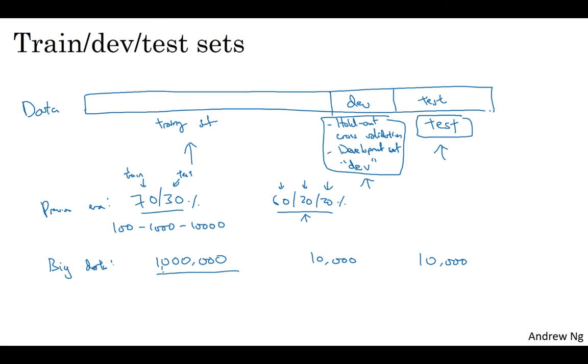So in this example, where you have a million examples, if you need just 10,000 for your dev and 10,000 for your test, your ratio would be more like this 10,000 is 1% of 1 million. So you have 98% train, 1% dev, 1% test. And I've also seen applications where, if you have even more than a million examples, you might end up with 99.5% train, and 0.25% dev, 0.25% test, or maybe a 0.4% dev, 0.1% test. So just to recap, when setting up your machine learning problem, more often set it up into a train, dev, and test sets. And if you have a relatively small data set, these traditional ratios might be okay. But if you have a much larger data set, it's also fine to set your dev and test sets to be much smaller than 20% or even 10% of your data. We'll give more specific guidelines on the sizes of dev and test sets later in this specialization.